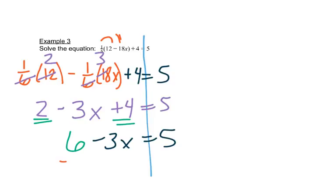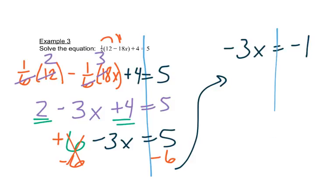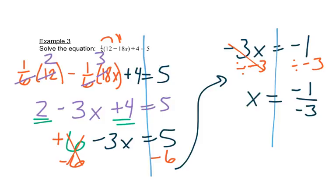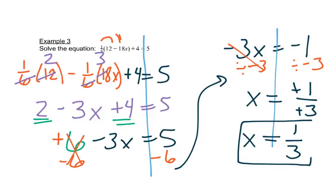Now I can move. I can subtract 6 from both sides — remember it's really plus 6 if there's nothing in front of it, so the opposite is minus 6. That leaves me with negative 3x equals negative 1. So we'll divide both sides by negative 3. Negative 1 divided by negative 3 gives a long decimal in your calculator, so instead let's think of it as a fraction. The negative divided by negative cancels out, giving us positive 1/3.